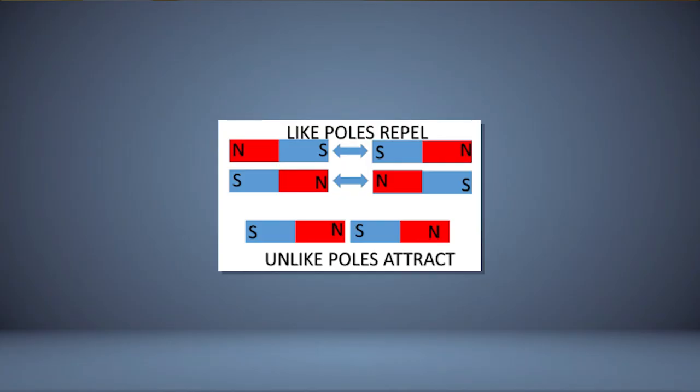Students can classify and segregate magnetic and non-magnetic materials. They can also add one more feature to their intelligent doll based on the property that like poles of a magnet repel each other and unlike poles of a magnet attract each other. Our intelligent doll can now shoo away a bug but accept a candy.